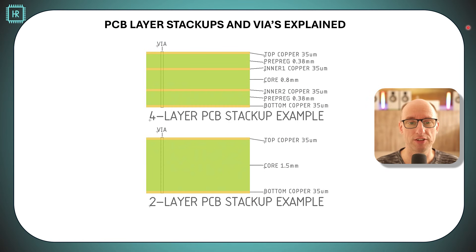The next thing we need to look at is PCB layer stack ups and VIAs. Now a PCB layer stack up is basically a cross section of a board. On the bottom here we see a standard cross section for a two layer board with a thickness of 1.6 millimeters. We see a layer of copper, a layer of insulator, usually FR4 material, and the bottom layer of copper.